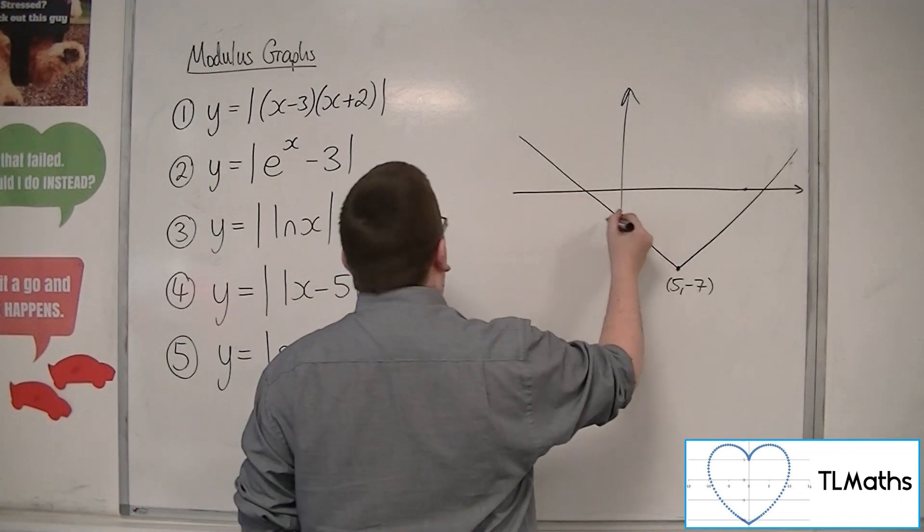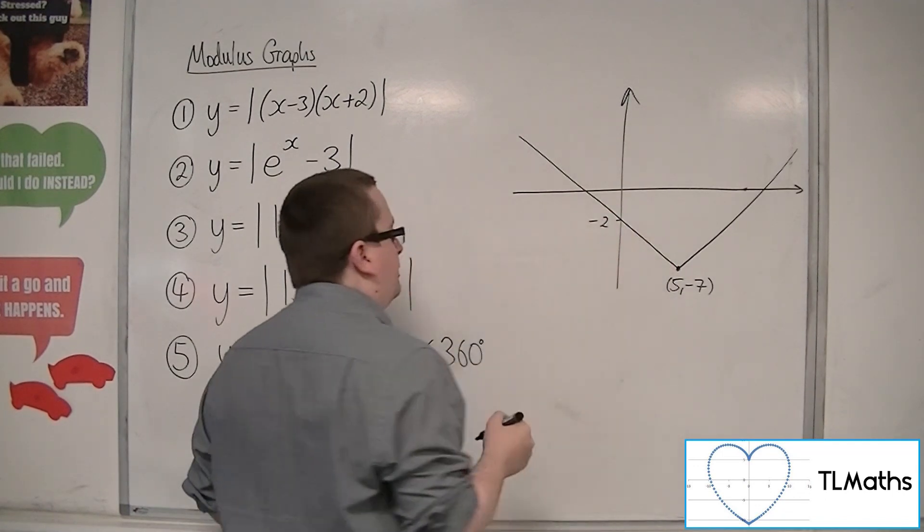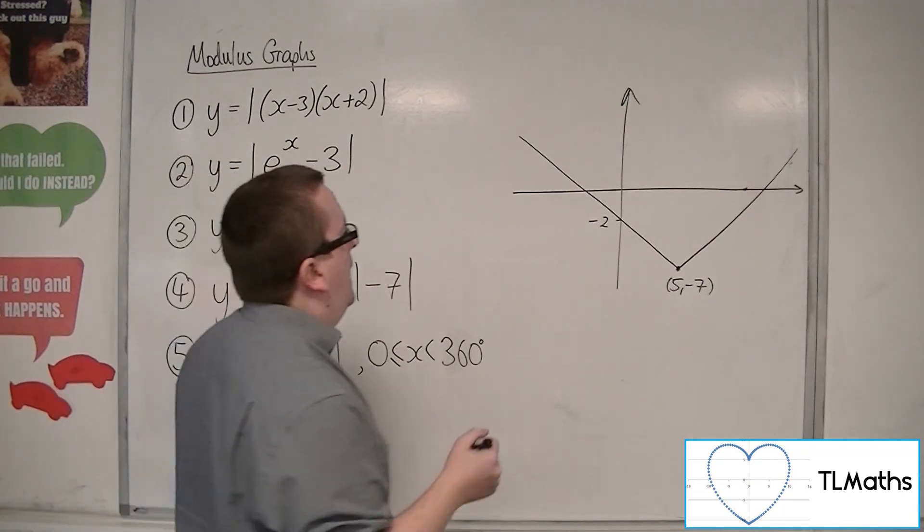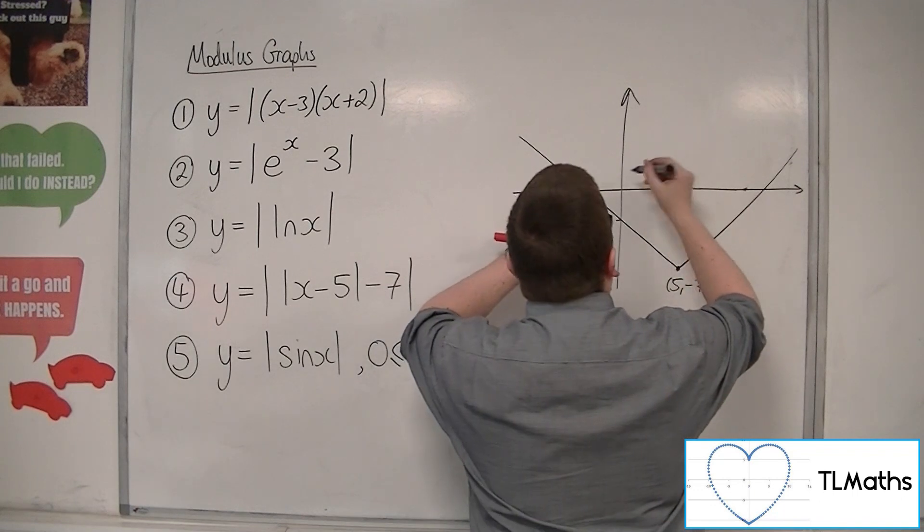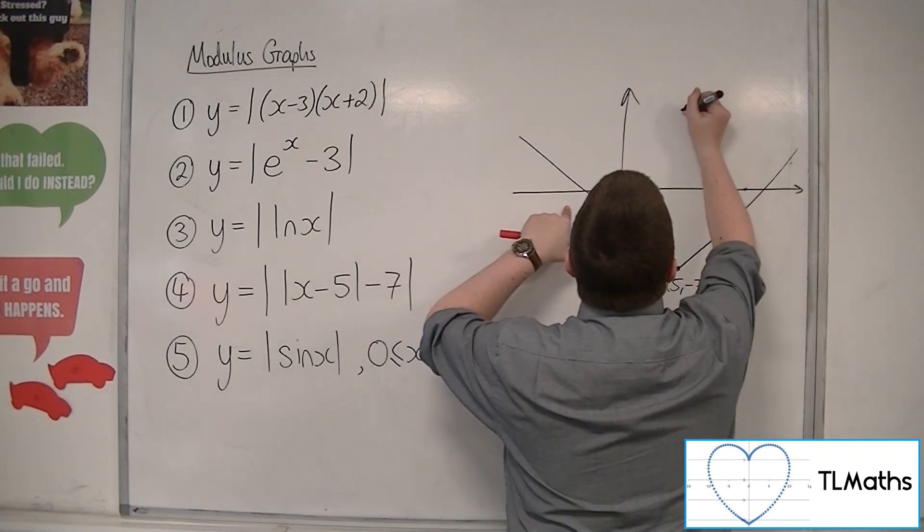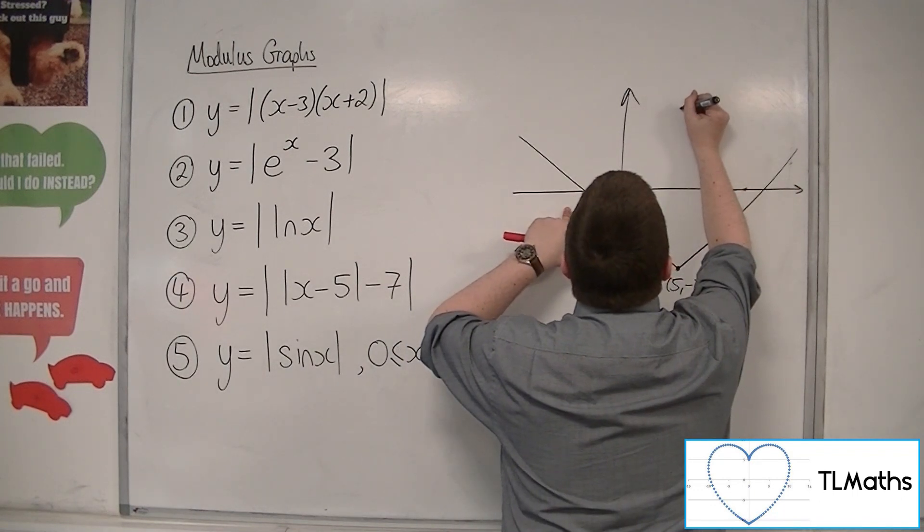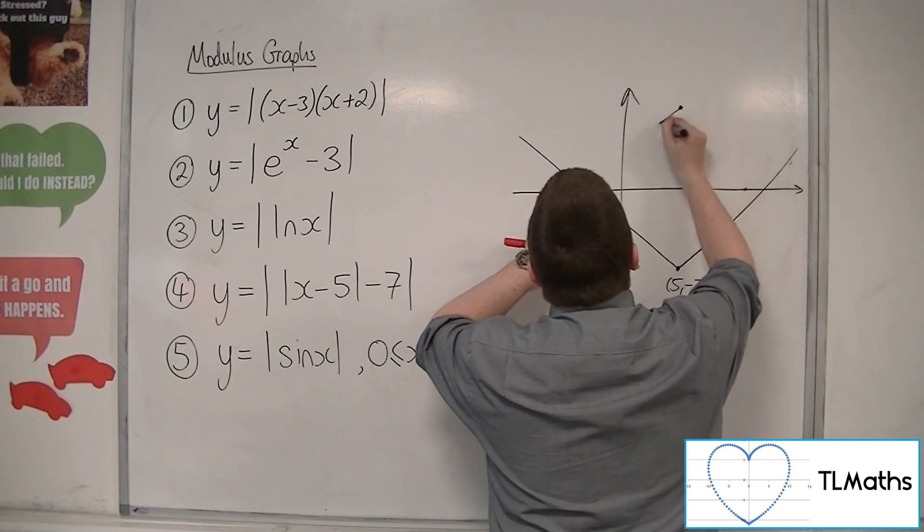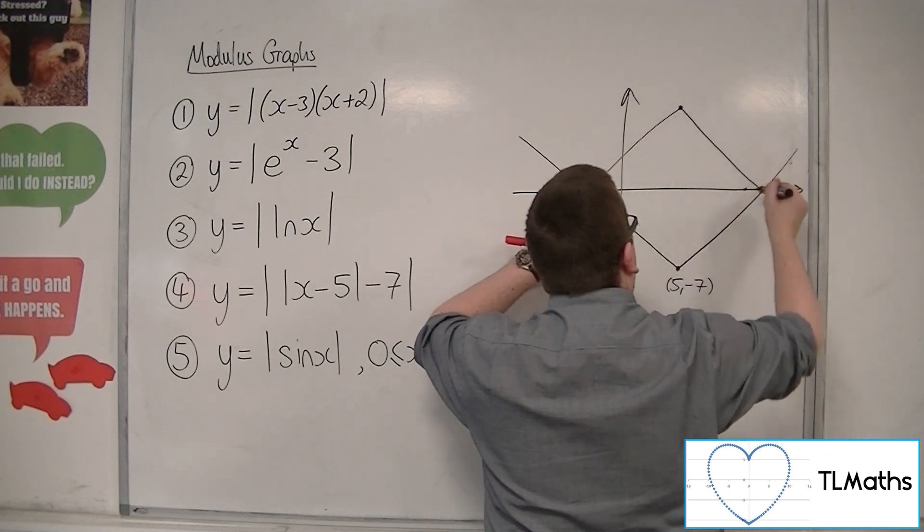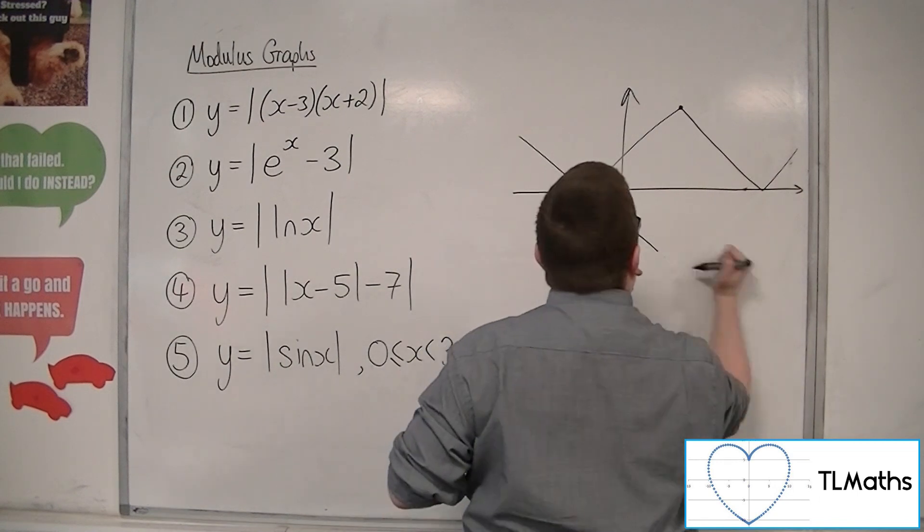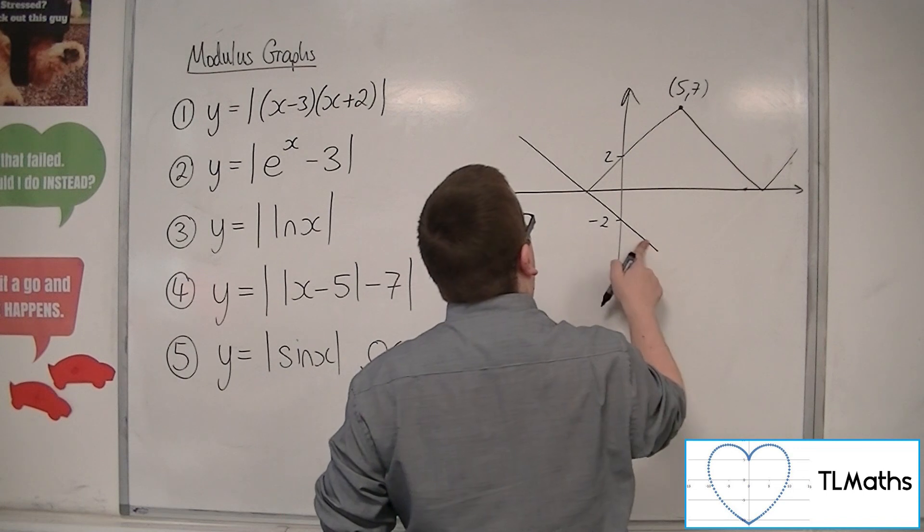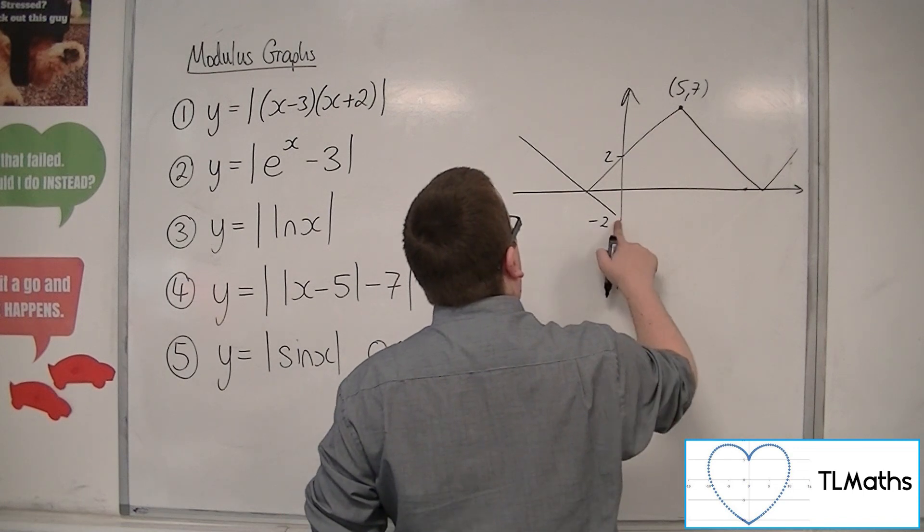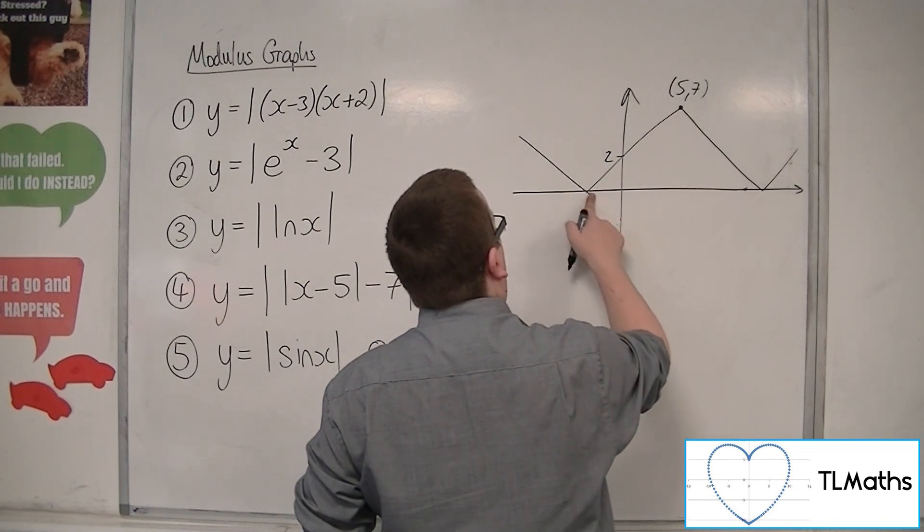So that would be at minus 2. So this part of the graph that's below the x-axis would get reflected up. So at 5, 7, we'd be somewhere up here. So that can go. That's 5, 7 now. That's at 2.